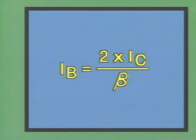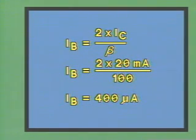Good practice requires that we double the collector current when calculating the base current. This is so we can be sure that adequate base current flows in the transistor to properly saturate it. By doubling the collector current, we can take into account any device variation in beta. And so, base current equals 2 times collector current divided by beta. Or, in this circuit, 2 times 20 milliamps divided by 100 equals 400 microamps.